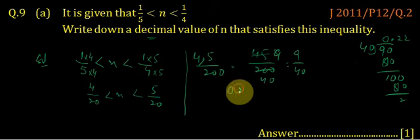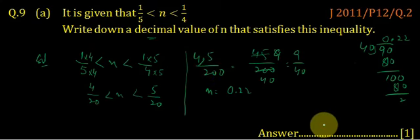One of the values is 0.22, which is in between 1 upon 5 and 1 upon 4. So 0.22 could be the value of n that satisfies the equation.